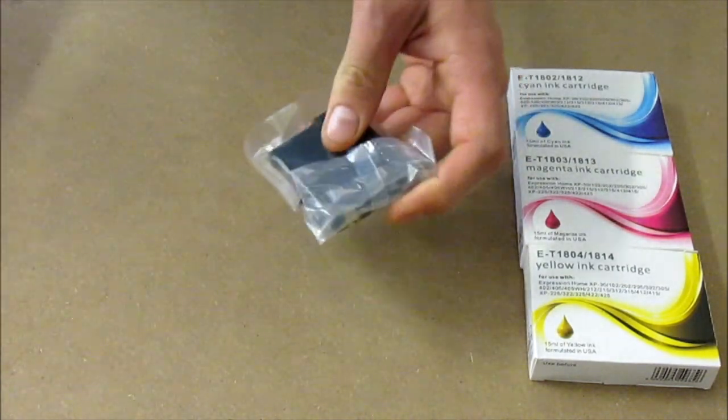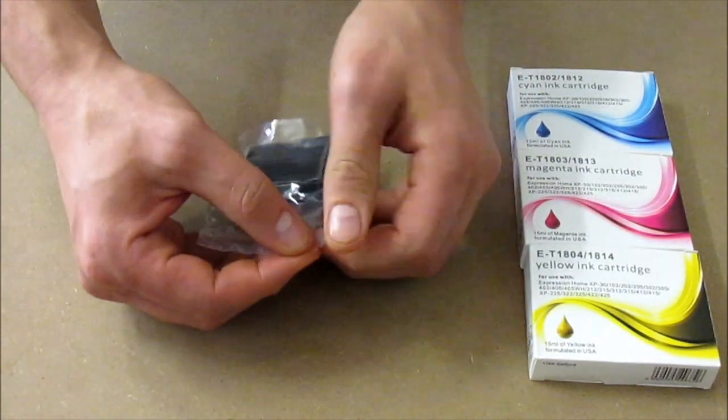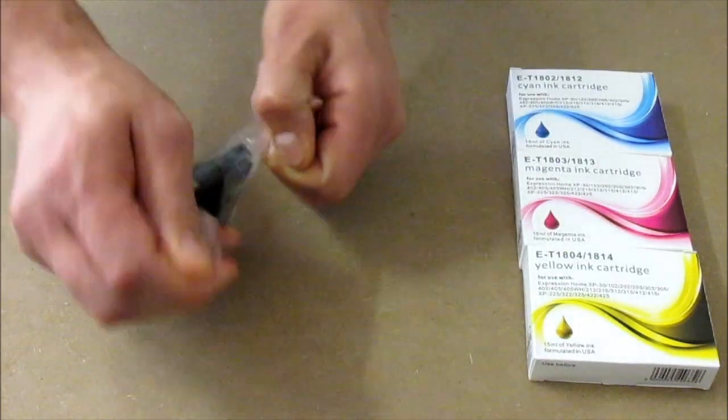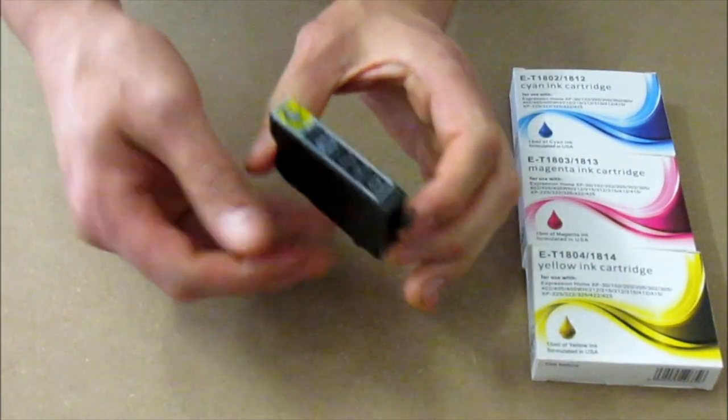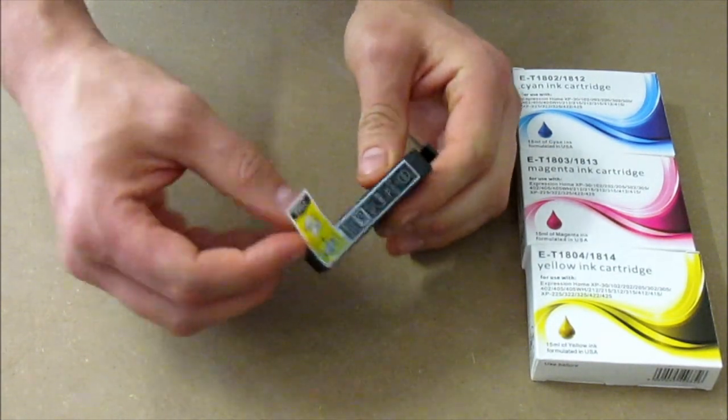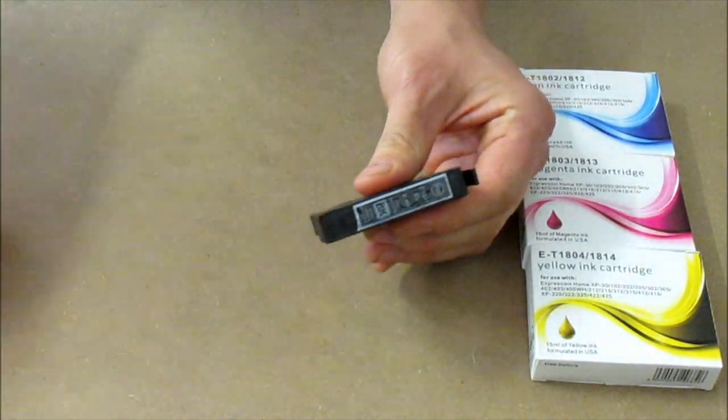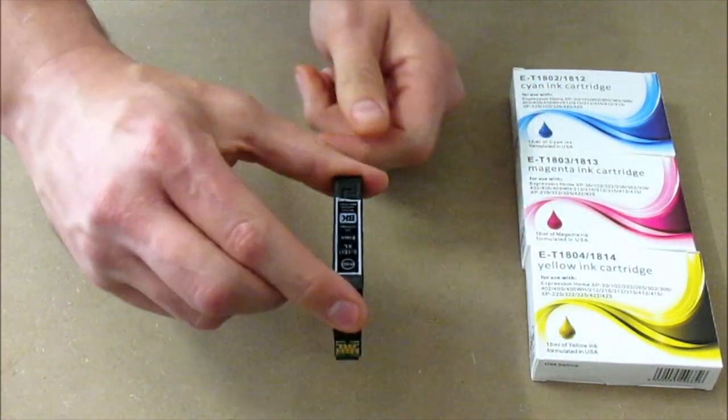Remove the cartridge from the packaging, locate the perforated edge on the plastic, remove the plastic covering, locate the yellow pull tab, remove this and install into your printer.